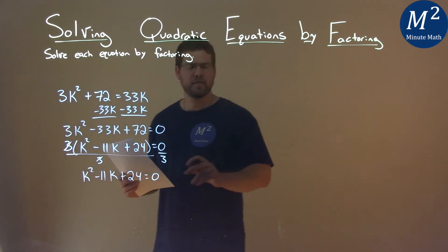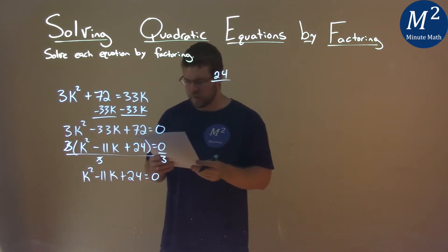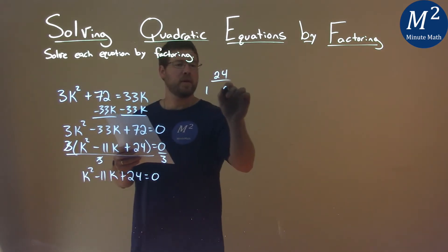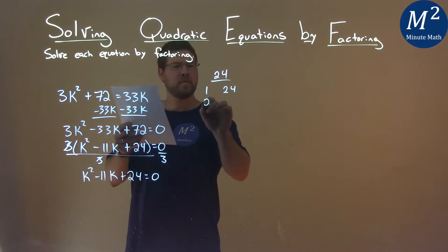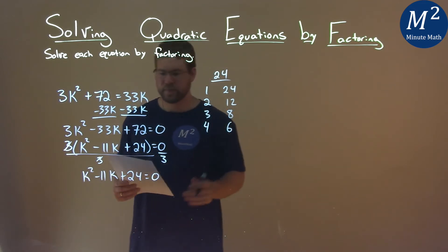So look at my c value being 24 and I want to break down the numbers that multiply to be 24. That's 1 and 24, 2 and 12, 3 and 8, and 4 and 6.